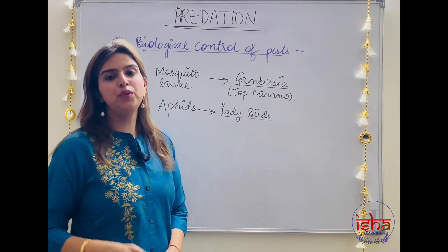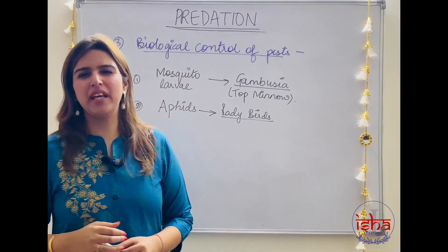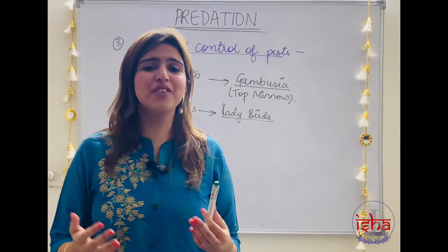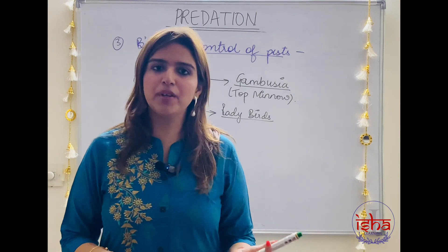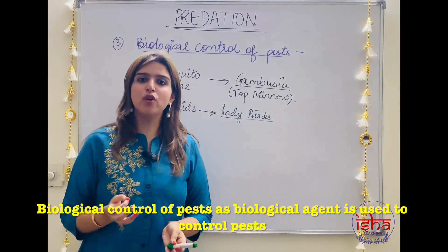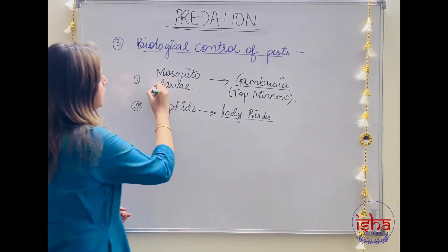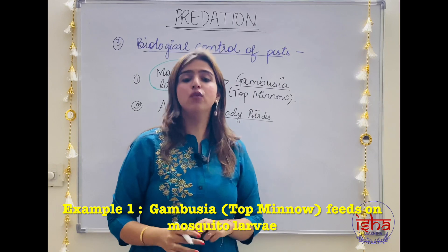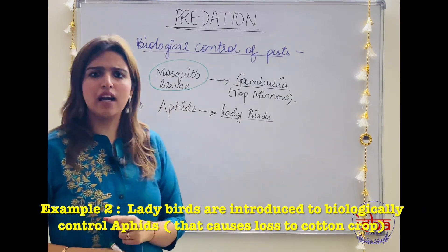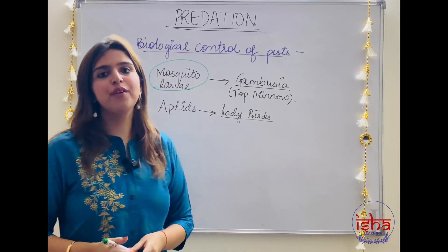Predators also have a feature: they can be used to hunt down prey that is causing us disadvantage — attacking our crops, or like a mosquito spreading dengue or malaria. So why not exploit this feature of predators? This is indeed done and it is called the biological control of pests — a biological agent is used to control pests. For example, mosquito larvae are fed upon by Gambusia (top minnows). Another example is aphids, which very easily attack cotton crops causing huge crop losses. These can be biologically controlled by introducing ladybirds, which are beautiful and also do our work.